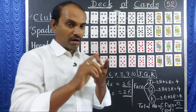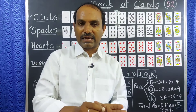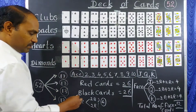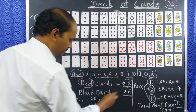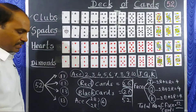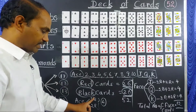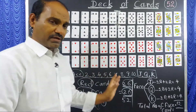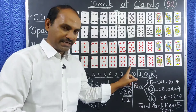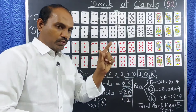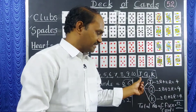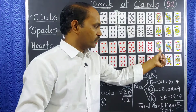Red cards are hearts and diamonds; black cards are spades and clubs. Red color: 26, black color: 26, total 52 cards. For Ace, 2 are black and 2 are red. Every card — Ace, number cards 2 through 10, and face cards — each has 2 black color and 2 red color cards. Jack also has 2 black and 2 red.